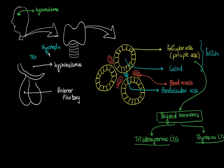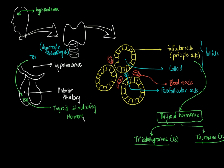The hypothalamus releases thyrotropin releasing hormone (TRH). This TRH acts on the anterior pituitary, which in response releases thyroid stimulating hormone — TSH. The thyroid stimulating hormone has a positive, or releasing, effect on the thyroid gland, so it acts on the thyroid gland, which in turn produces T3 and T4.